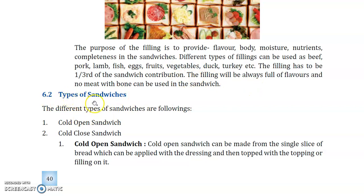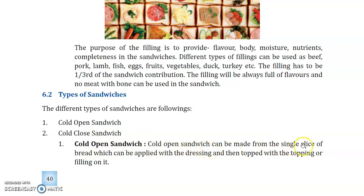Now we have to understand what are the types of sandwiches. There are two main types: open sandwich and closed sandwich. A cold open sandwich can be made from a single slice of bread, which is applied with dressings and then topped with a filling on it.